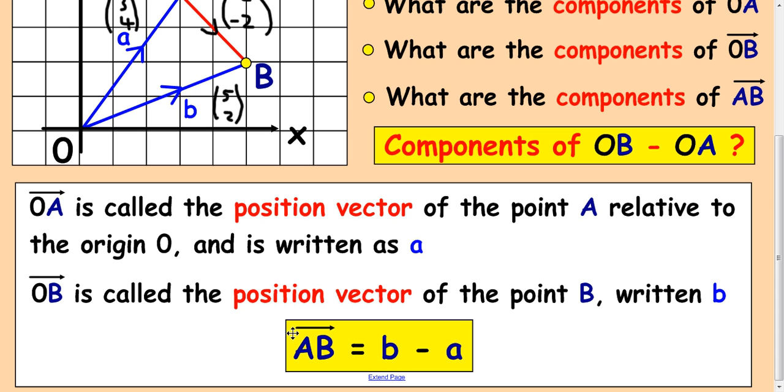If you wanted to get the components of a vector from P to Q, you do Q take away P, which would be position vectors which you get from the coordinates.